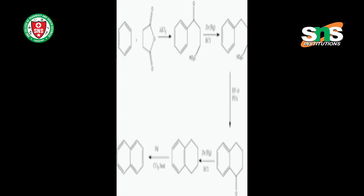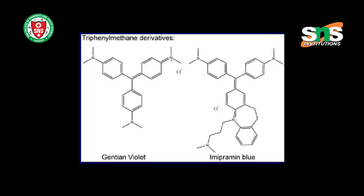Next are the derivatives of tri-phenyl methane. Two important derivatives are gentian violet and imipramine blue. Gentian violet is used as an antiseptic dye to treat fungal infections of the skin and also has antibacterial activity. Imipramine blue is another derivative of tri-phenyl methane used for the treatment of depression disorders and anxiety disorders.